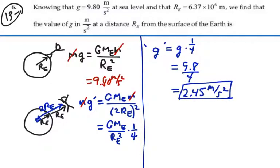So if you were above the surface of the earth, equal to the radius of the earth itself, the gravitational acceleration at that point would be one-fourth what it is on the surface. It's 2.45 meters per second squared.